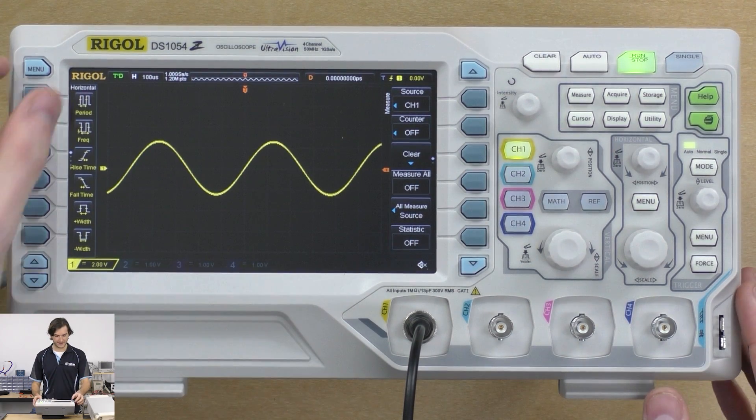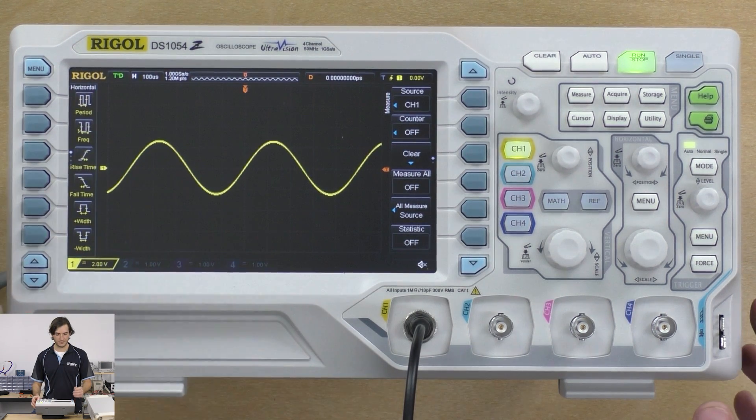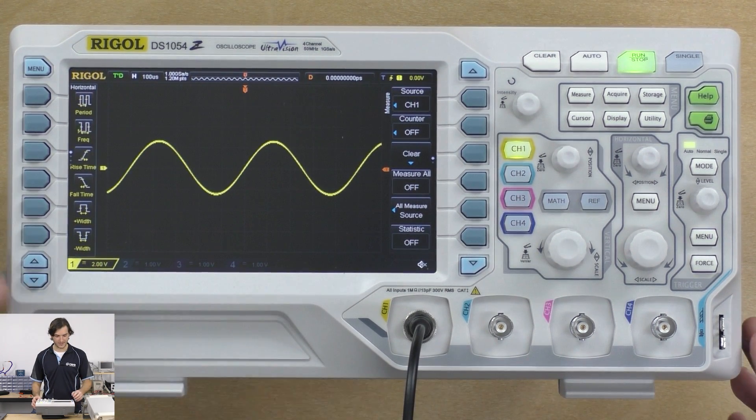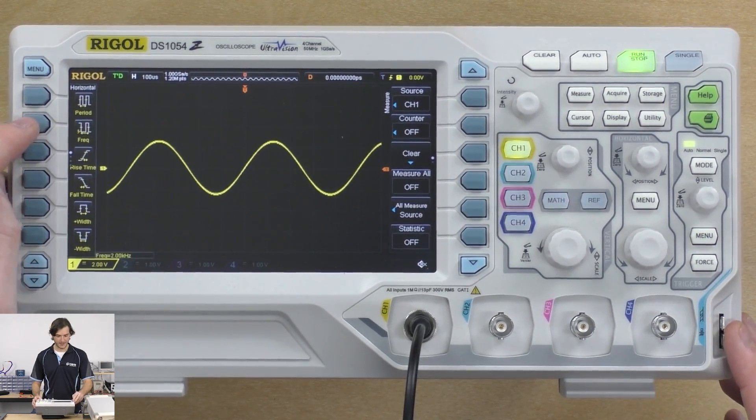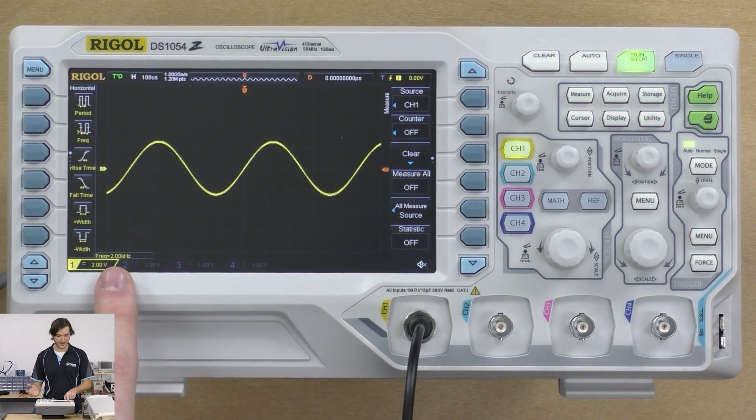But what I really like is down the left-hand side we have this dedicated menu for taking signal measurements. So straight away we can decide we want to measure the frequency and once we press that we get a box down the bottom that just gives us a direct readout of the frequency.